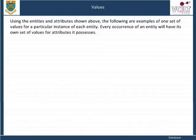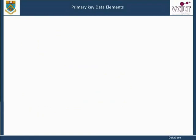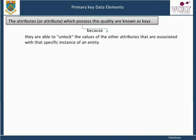Using the entities and attributes shown above, the following are examples of one set of values for a particular instance of each entity. Every occurrence of an entity will have its own set of values for the attributes it possesses. If the value of certain attributes, or perhaps just one attribute, is known for a particular entity, this enables us to discover the value of other attributes associated with that entity. The attributes or attribute which possess this quality are known as keys, because they are able to unlock the values of the other attributes associated with that specific instance of an entity.